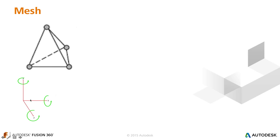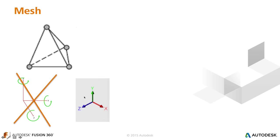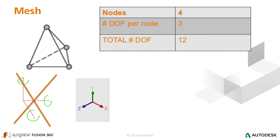For each node we have a degree of freedom. Normally we have six degrees of freedom — three rotation and three translation along X, Y, Z. Fortunately, with tetrahedrals we don't have to worry about rotations, just translations at each node. By fixing certain faces or edges, we're taking degrees of freedom out of those nodes. For a first-order element we have four nodes, and with three degrees of freedom per node, the total number of degrees of freedom for one element is 12.